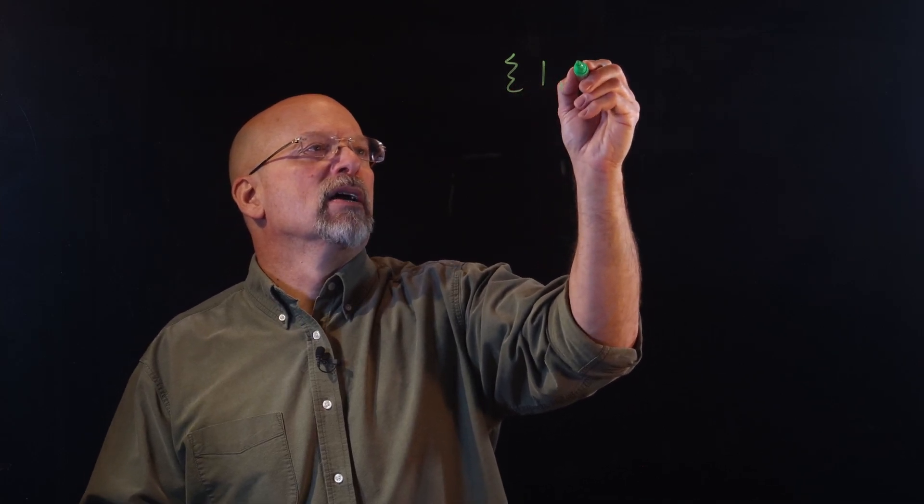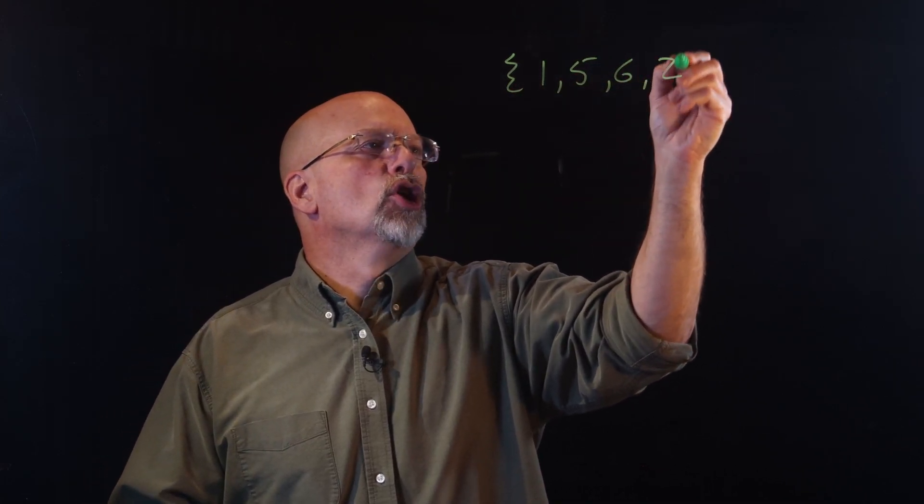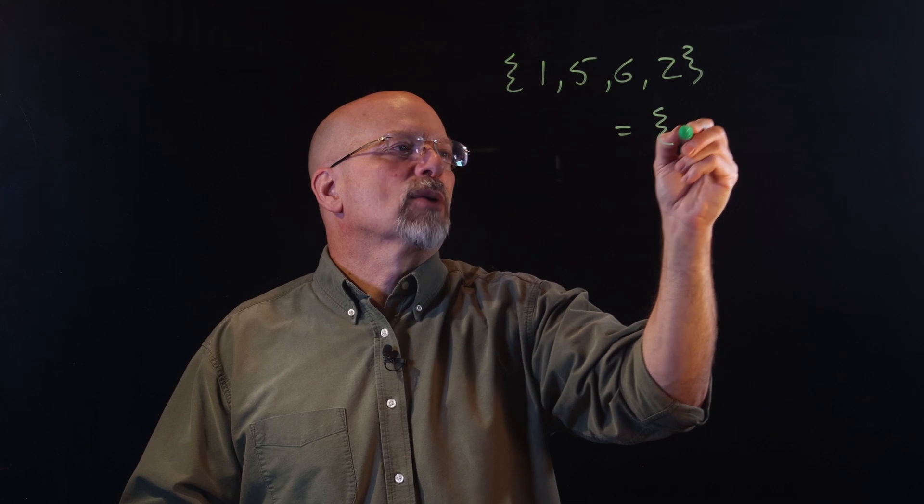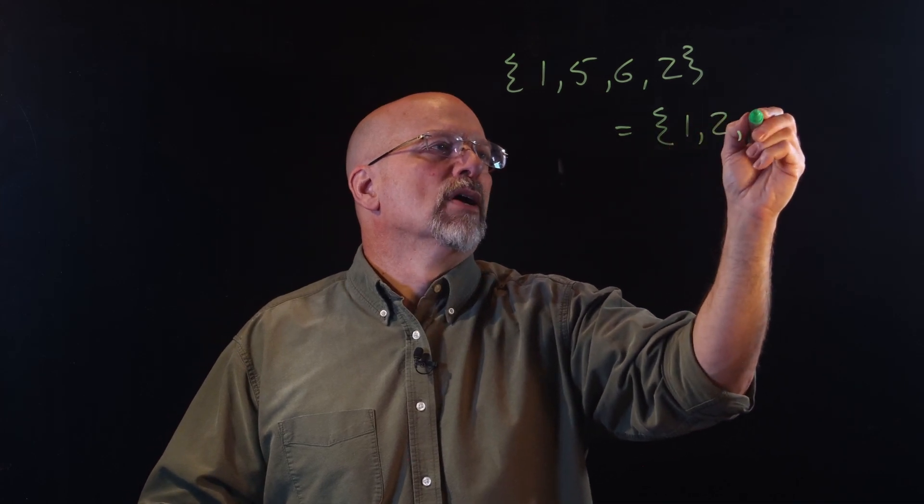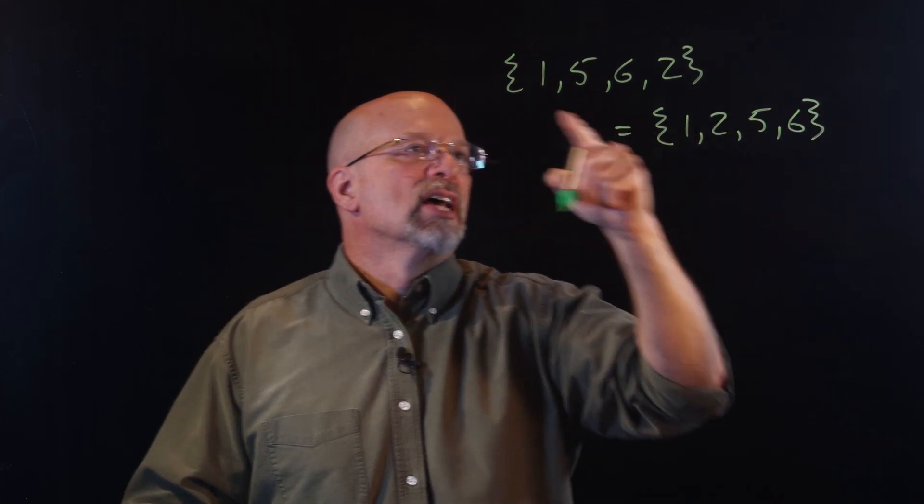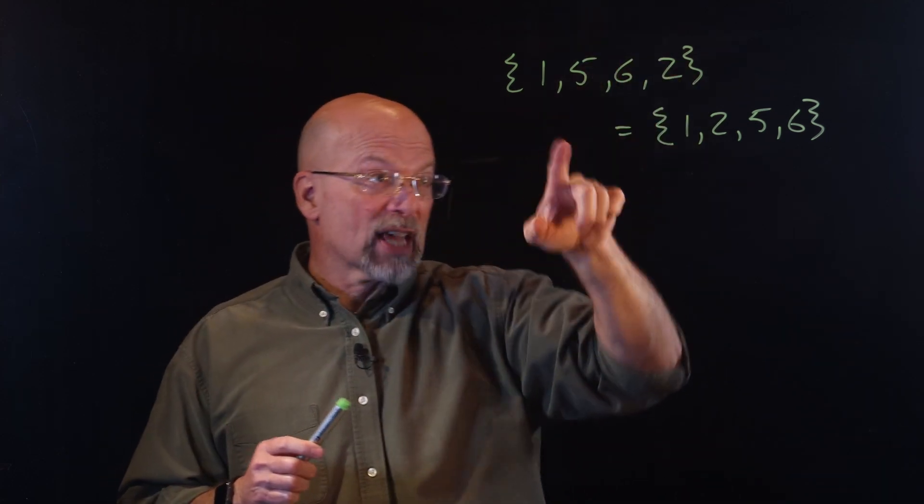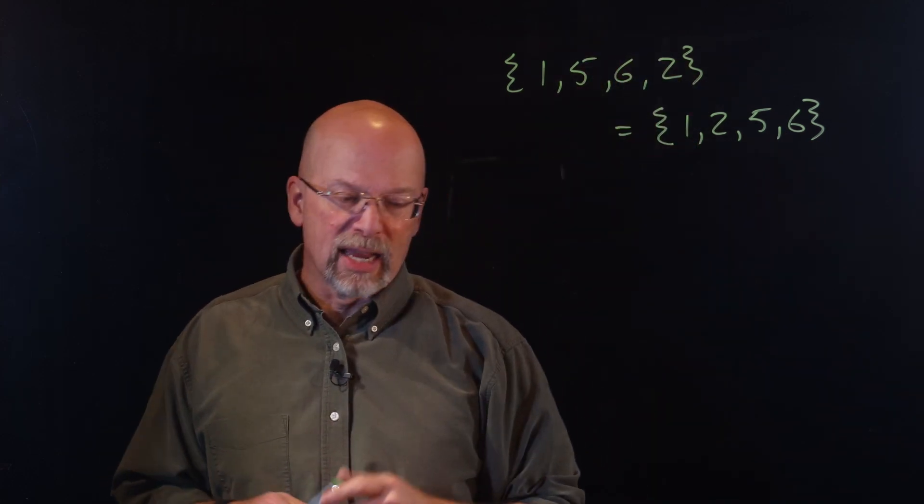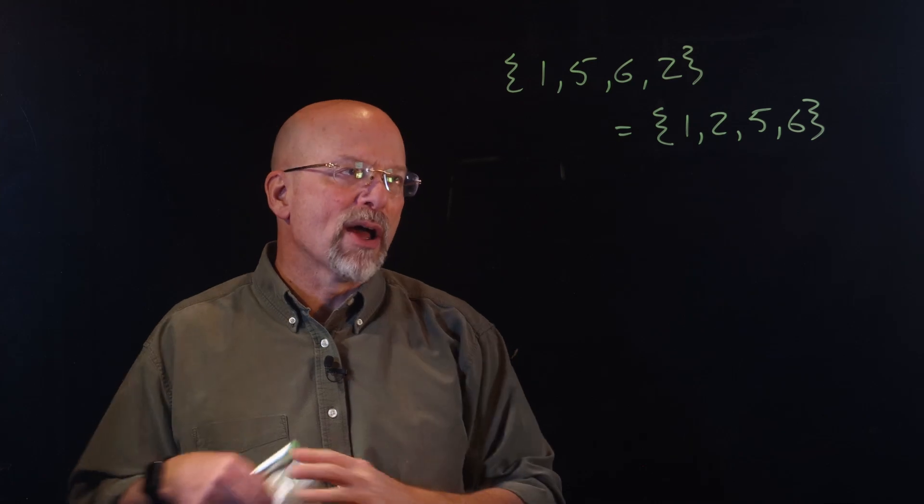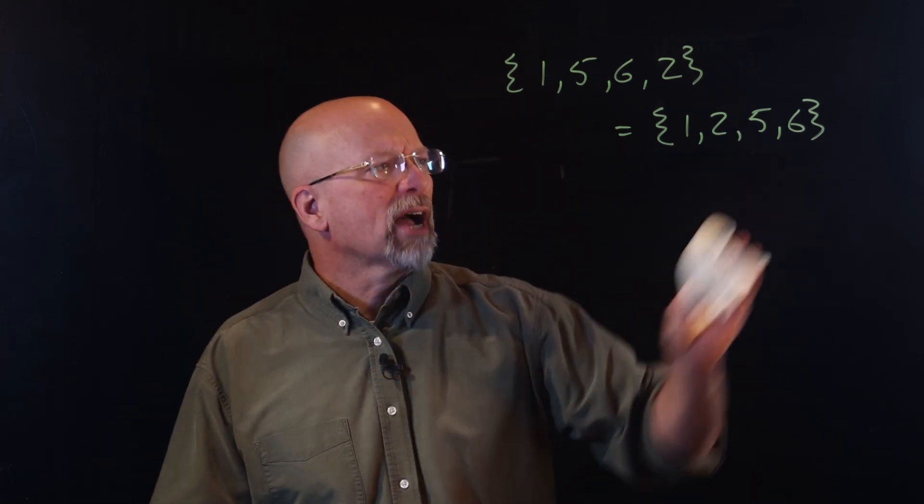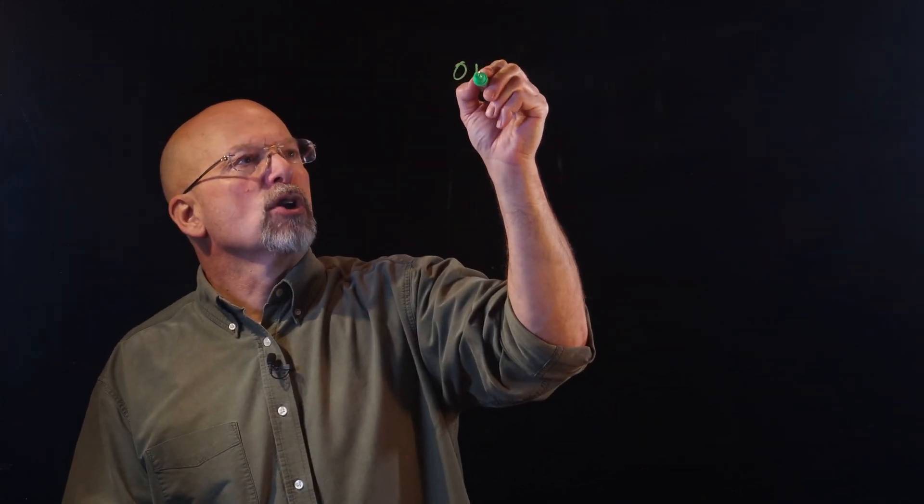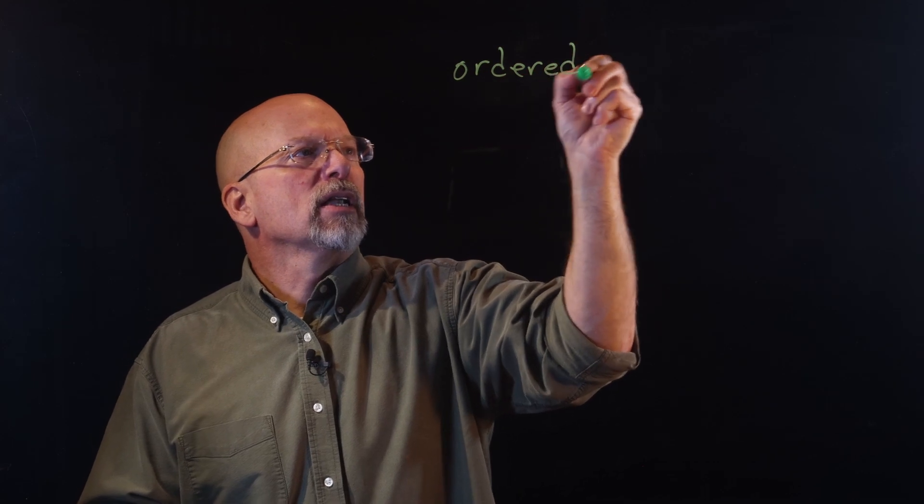Up to this point, we have been talking about unordered sets, so I would have a set {1, 5, 6, 2}, and that's actually equal to the set {1, 2, 5, 6}. The elements, all the elements that are in this set are also contained in this set. Some applications, however, require an ordering of the elements within that set. When we order the elements inside of a set, we're going to refer to this as an ordered collection.